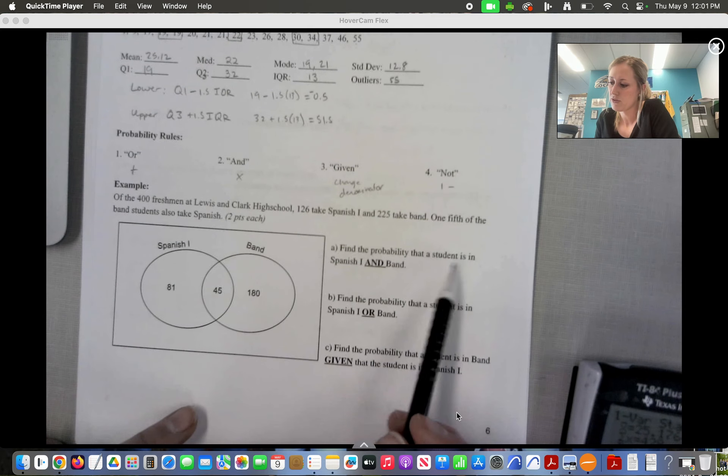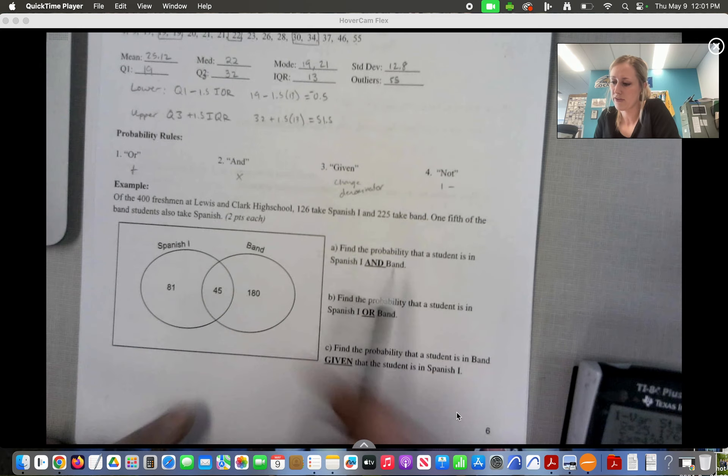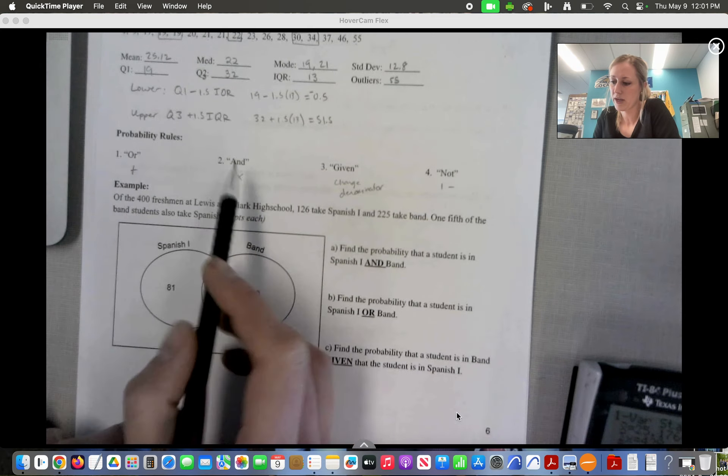So we want to find the probability that a student is in Spanish and in Band. So and means we're going to multiply. If they're in Spanish and in Band, that is only these 45. So we're going to do 45 over our total 400 freshmen. And I'm going to go ahead and change that to a decimal. 45 divided by 400, 0.1125.